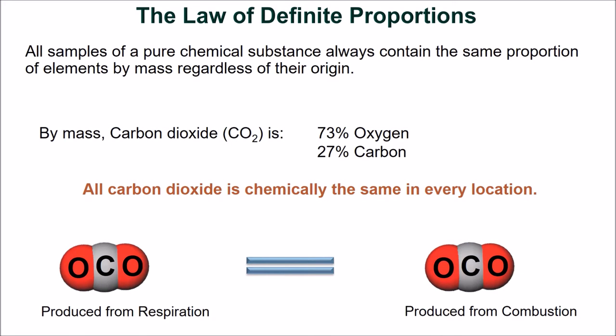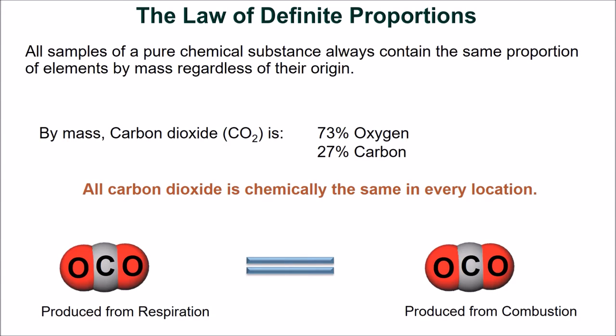The second law, put forth by John Dalton, is the law of definite proportions. It states that all samples of a pure chemical substance will always contain the same proportion of elements by mass, regardless of the sample's origin. By mass, carbon dioxide is 73% oxygen and 27% carbon. The law of definite proportions implies that irrespective of production — either by combustion or respiration — all carbon dioxide is chemically the same in every location.